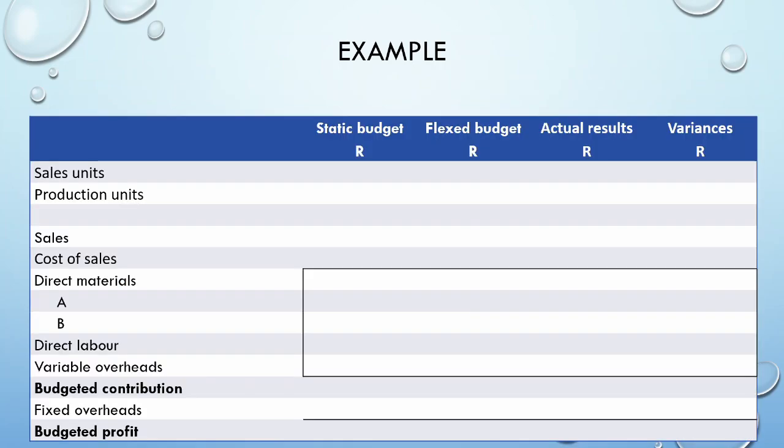Let us begin by looking at the basic layout. You will notice that on the left-hand side, we have our basic income statement format. We have two extra rows for sales and production units. Remember that production costs must be flexed using the production units, whereas the sales costs must be flexed using sales units.